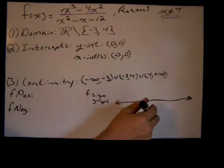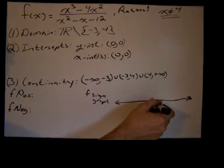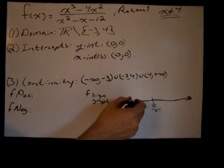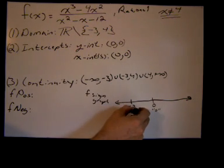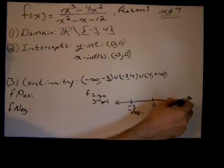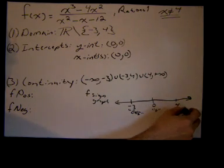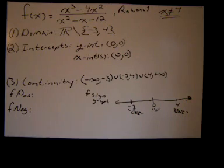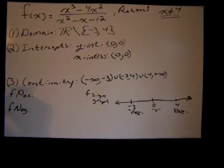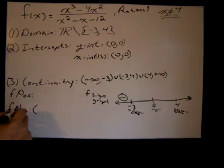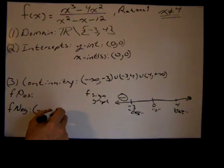On this number line, I'm going to plot where f equals 0 and put a little '0' under that point, and where f is undefined — at x equals negative 3, I'll mark 'does not exist,' and at x equals 4, another 'does not exist.' Then I'll test the intervals in the original function f. To the left of negative 3: a big negative number cubed over a big negative number squared gives a negative over a positive, which yields a negative number. So f is negative from negative infinity to negative 3.